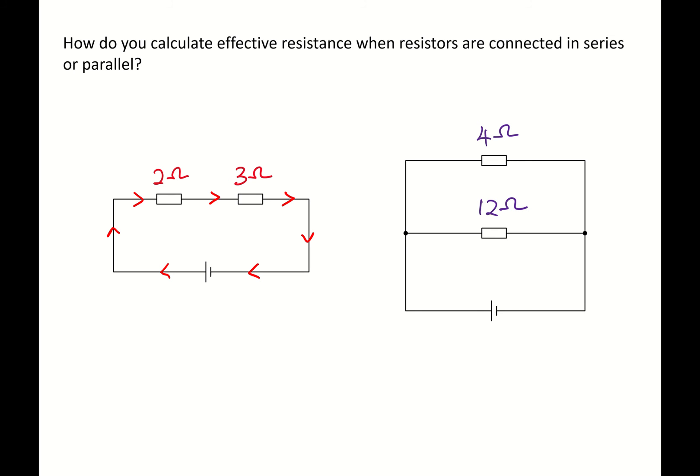And because the current flows one path, this is the case where 2 ohms and 3 ohms are connected in series. And when resistors are connected in series, just apply the formula Rs equals 2 plus 3 equals 5 ohms.